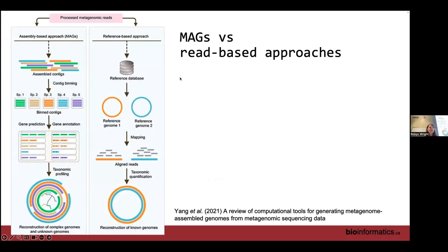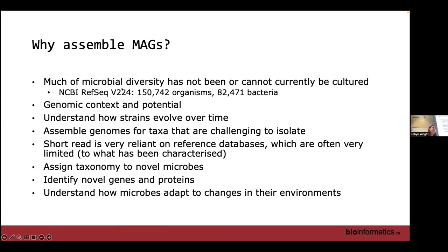To briefly overview how this differs from read-based approaches: with read-based approaches, we compare raw reads to reference genomes for taxonomic or functional annotation — comparing them to databases of things we already know about. With assembly-based approaches, we assemble reads into contigs and then use those de novo contigs for predicting which genes or taxa they might belong to.